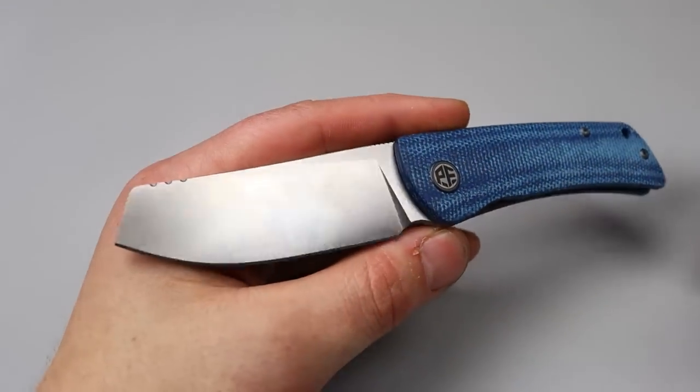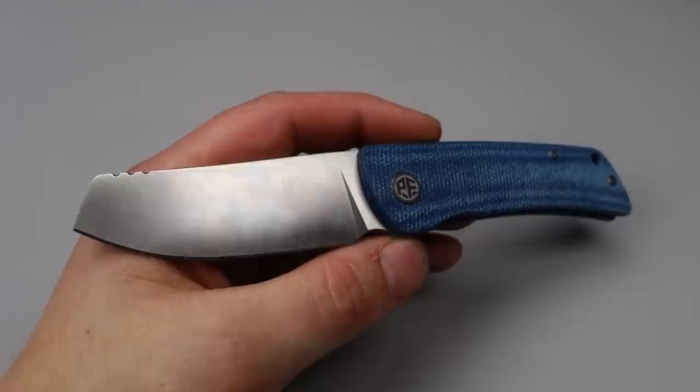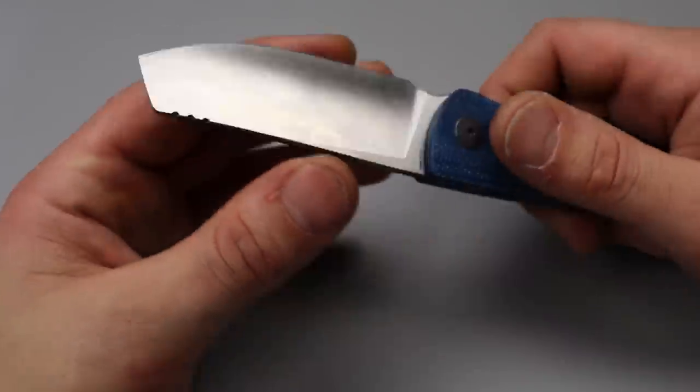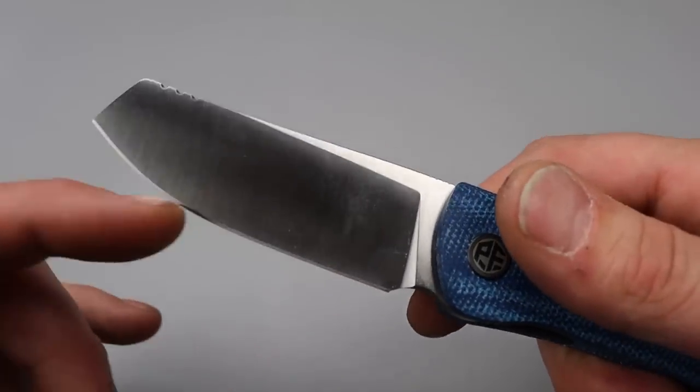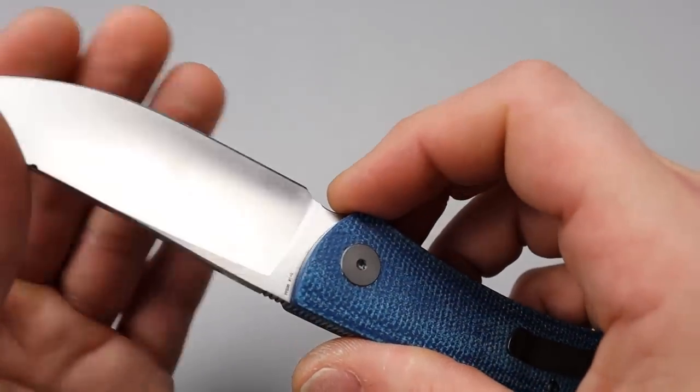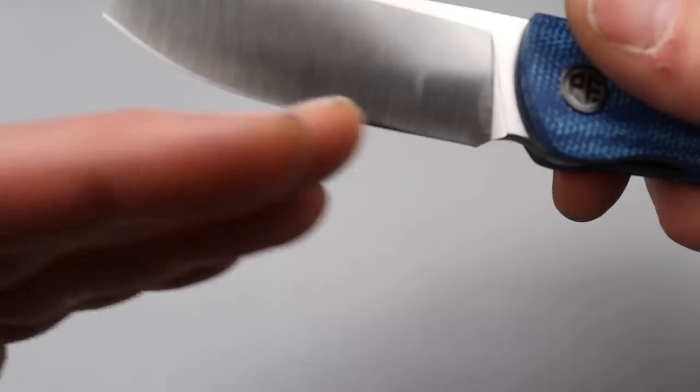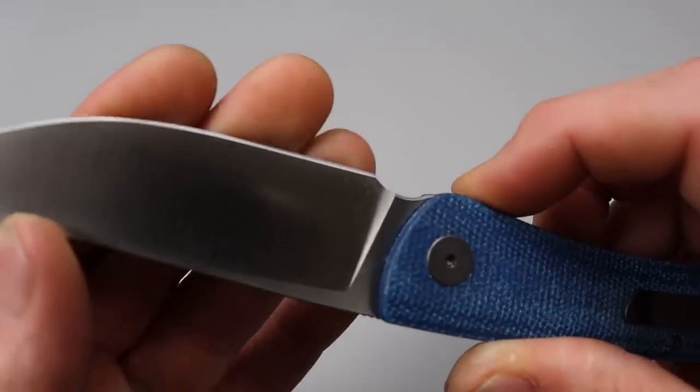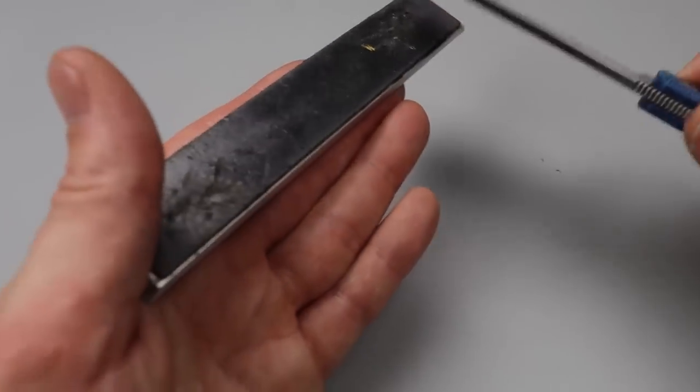When you polish it, sometimes it loses its bite. And then even when it does have its bite, it seems like it doesn't take very long and it winds up getting slick and it loses that bite that you want in your edge. Now this edge, it's not the best edge. It has a burr. So this is not the best edge. You can almost hear it. You really shouldn't hear that. So it has a burr. I could probably strop it off.